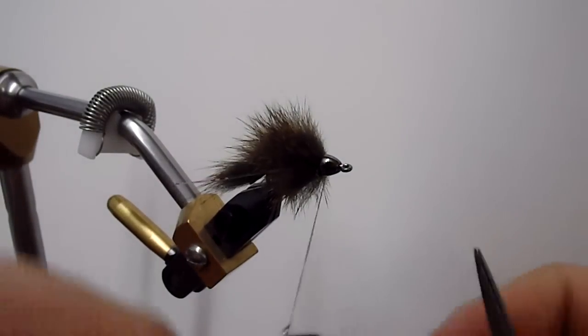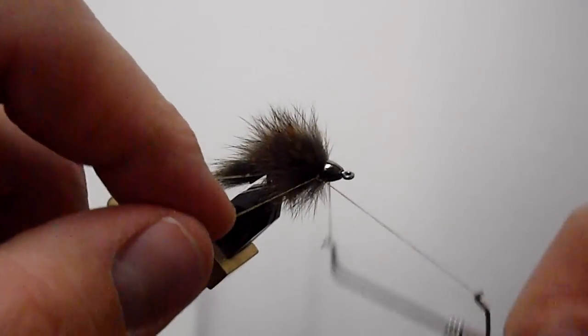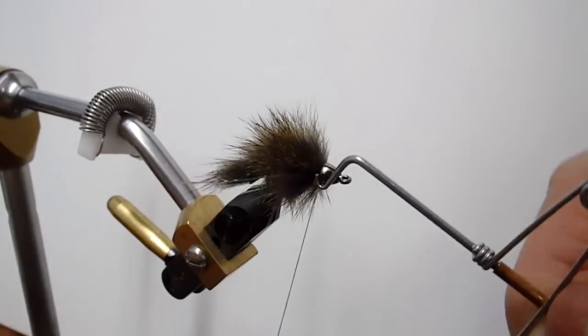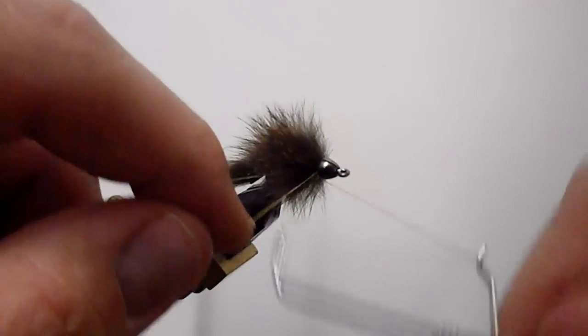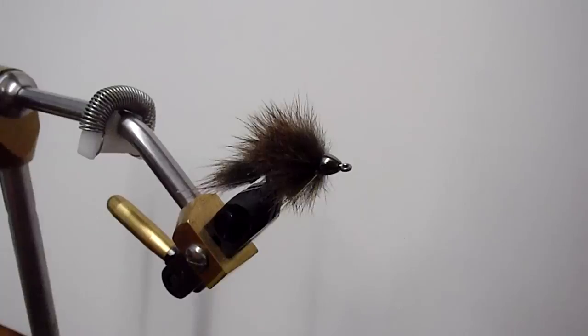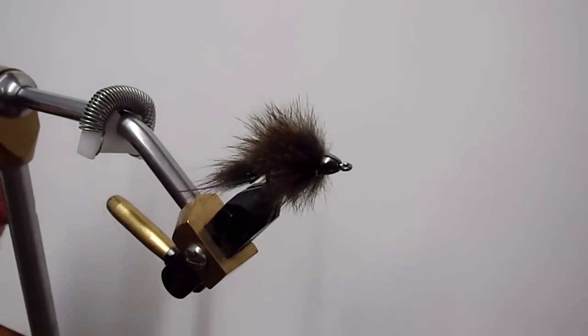And then to finish this off, I'm just going to go ahead and make a few wraps of thread with our whip finisher right behind that cone. I like to do two of these just for good measure. Trim off your thread, and you're done.